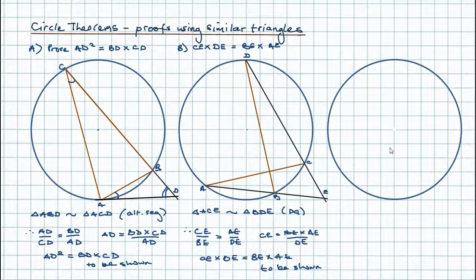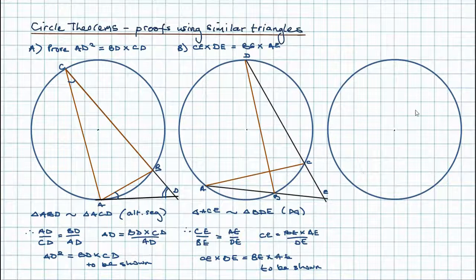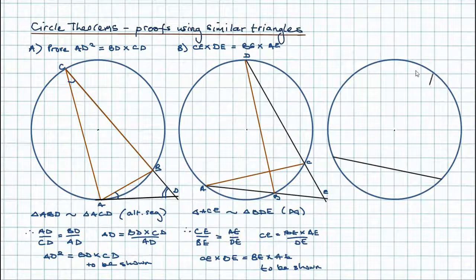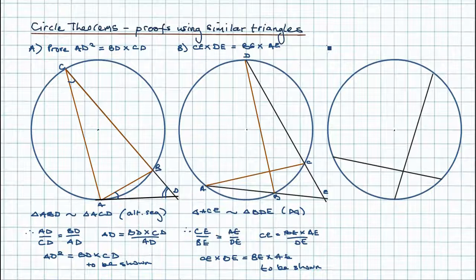Let's draw our circle again and this time we're not going to draw secants and tangents but instead two chords that intersect — two chords that cross over inside the circle. This is the intersecting chords theorem, and we're going to prove it.